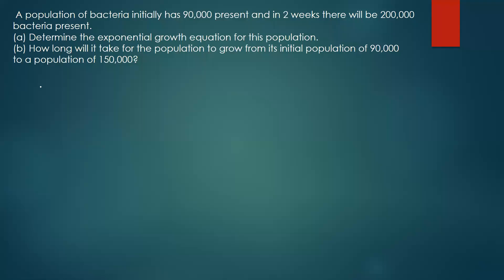This is how you solve it without using a calculator. The question is: the population of a bacteria is initially 90,000, and in two weeks there will be 200,000 bacteria present. Determine the exponential growth equation for this population. The procedure is the same — you always write first the exponential growth equation.